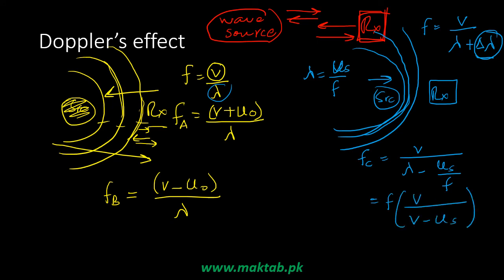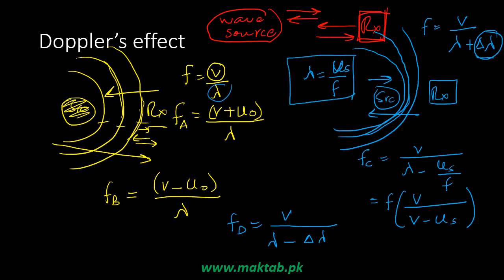In the fourth case, where the source is moving away from me, the perceived frequency f_D uses a longer wavelength. I add delta lambda instead of subtracting it, because the wavelength increases when the source moves away. So the formula becomes: f_D equals v divided by (lambda plus v_s over f), which simplifies to f times v divided by (v plus v_s). This is the Doppler formula when the source recedes from the observer.